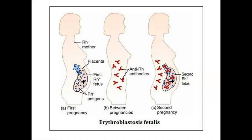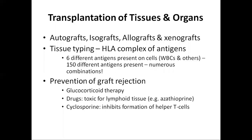When transplantation of tissues and organs is needed — for example in cases of burns — grafts can be taken from different organisms, different species, or the same individual. There are four types of grafts: autografts, isografts, allografts, and xenografts. An autograft is taken from the same individual, such as skin grafting in burns, and the chance of rejection is almost nil. An isograft is taken from an identical twin and the chance of rejection is also nil.